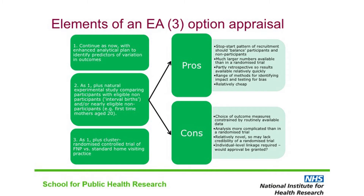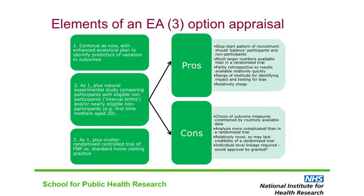The main drawback is that we would be limited to the outcome measures available in the routinely collected data. The third option was to conduct a cluster randomised trial along the lines of a trial already in progress in England and Wales. The pros and cons of this approach are a mirror image of those of the natural experimental approach — it would allow much greater control over the choice of outcome measures, but at a much higher cost because of the extra expense of gathering all the primary outcome data and conducting and managing a large trial. In our final report we recommended option two, coupled with an economic evaluation and a process evaluation. An evaluation based on the recommended design has now been commissioned in Scotland.